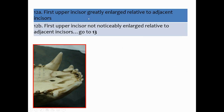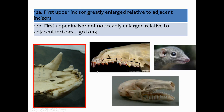Couplet 12: first upper incisor greatly enlarged relative to adjacent incisors, or 12B, first upper incisor not noticeably enlarged relative to adjacent incisors — go to 13. This skull does not look like the first upper incisor is notably enlarged. If it were, it would look like the example shown. Our first upper incisor is not noticeably enlarged, so we're going to 13.